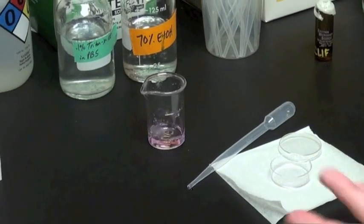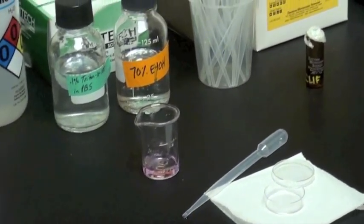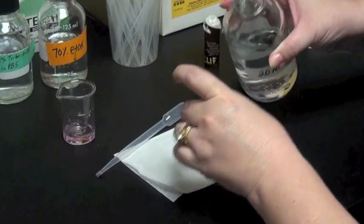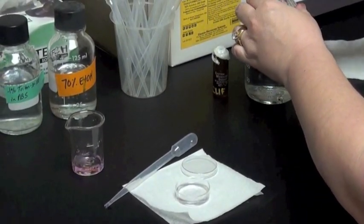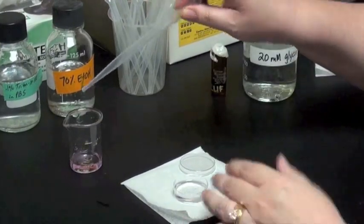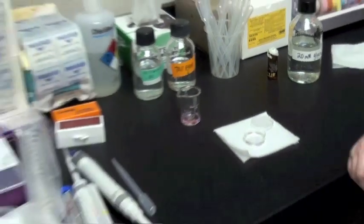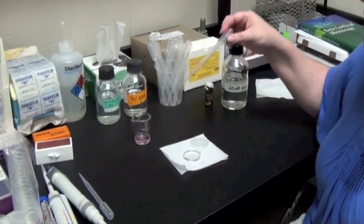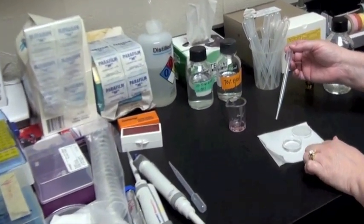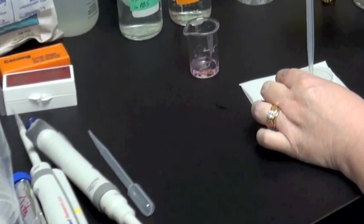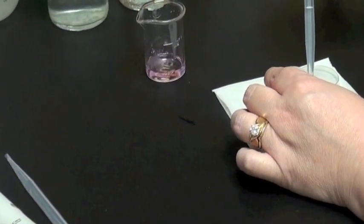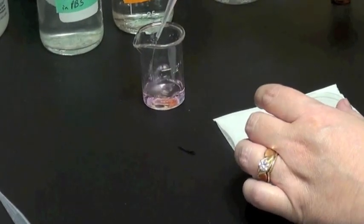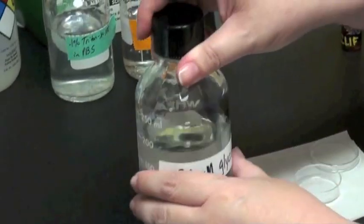We'll wash twice in the 20 millimolar glycine solution, and then we'll add 20 millimolar glycine and block our sample for 20 minutes at room temperature. This will ensure that all of my free aldehyde groups from my fixation have been compensated for and I don't get extra autofluorescence in my sample.